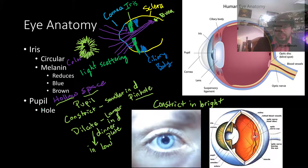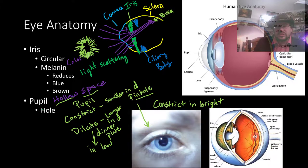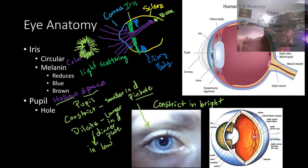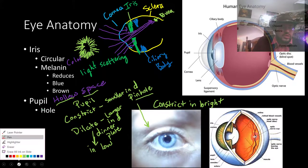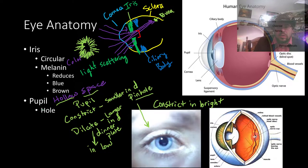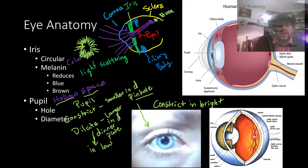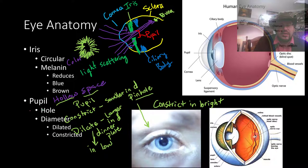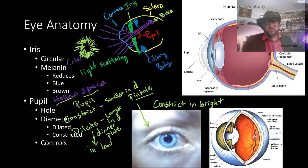Maximum dilation occurs in the lowest light conditions. Maximum constriction occurs in the brightest light conditions. The pupil controls the amount of light entering the eye. Your eye can actually be damaged by too much light exposure, so the pupil is a major defense against that.